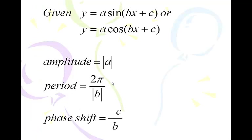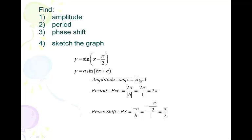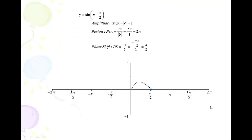Now we're going to throw some phase shifts in. The phase shift is negative c over b — that's where we're moving right or left. Here our first phase-shifted example: a = 1 so amplitude is 1, b = 1 so period is 2π, but we have negative π/2 inside. Phase shift = negative c over b = negative of (negative π/2) over 1 = positive π/2. If the phase shift is positive, you're moving the graph to the right. Normally the sine curve has a point at the origin and goes up to the right — the phase shift says move that point to the right π/2 radians, and then move in quarter period increments.